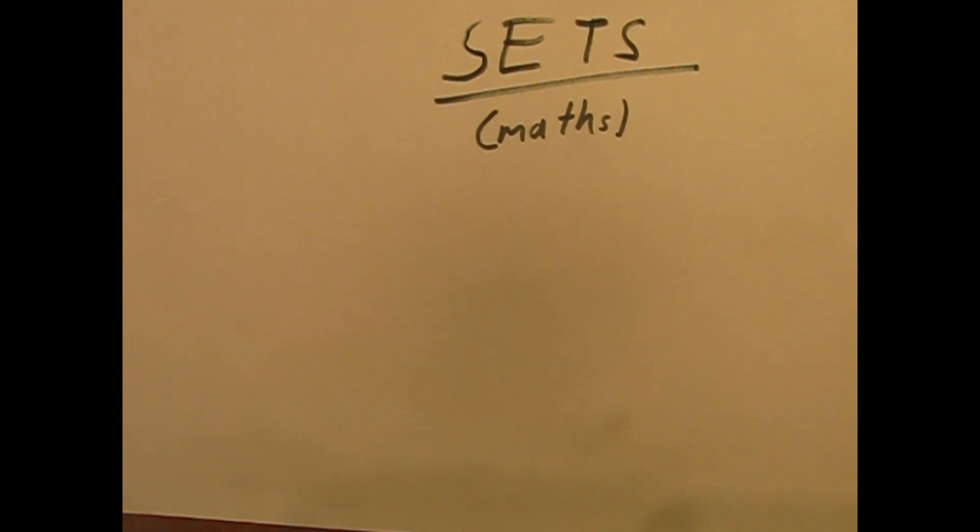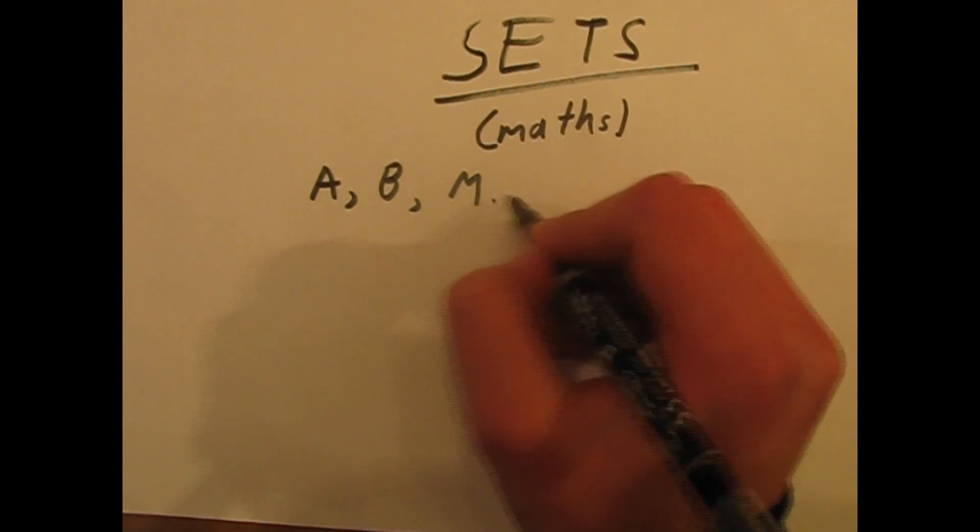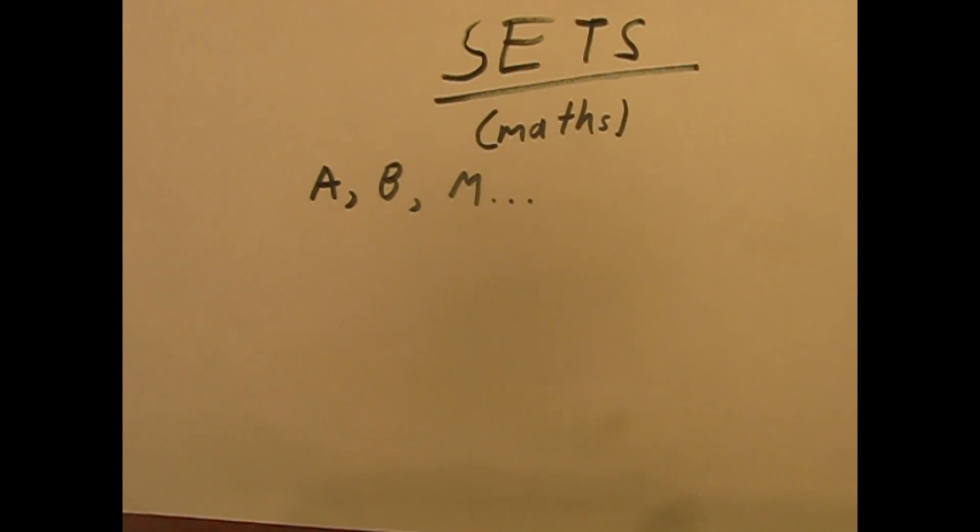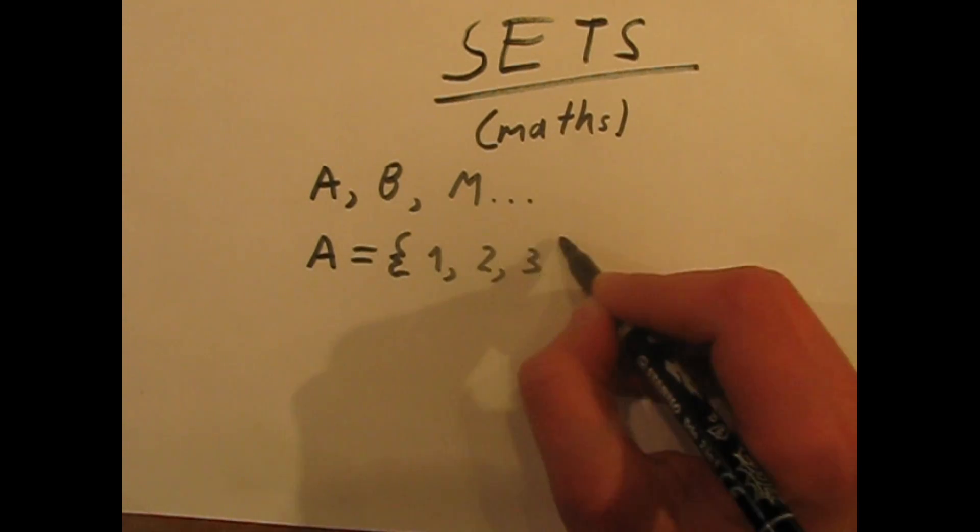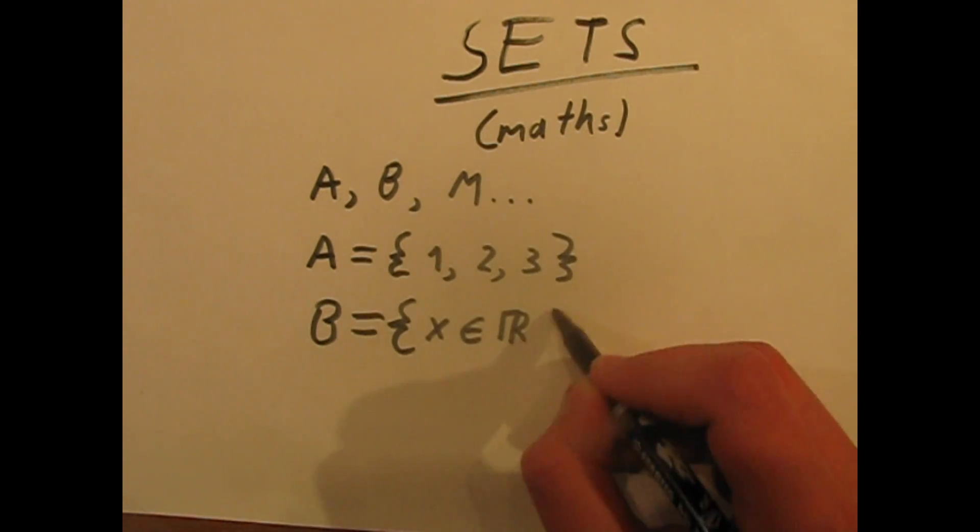The founder of set theory is George Cantor, a well-known German mathematician. Sets are usually symbolized using capital letters of the English alphabet, such as A, B, or M. Their components are written down inside curly brackets in two ways, either by simply writing them down or by describing them.